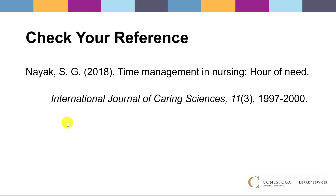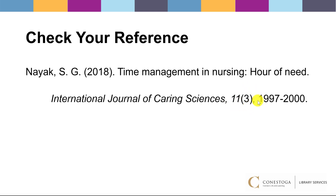Check your reference. Now that you've attempted to create a reference for the article, let's review how it should look. Note that the reference is double-spaced and the second line and any subsequent lines have a hanging indent. The reference starts with the author's last name first, followed by their initials, the date in brackets, the title of the article, the title of the journal italicized, the volume of the journal italicized, the issue number in brackets, and then the page numbers. Because this article was found in a library database, we're not including the URL, and there was no DOI available.